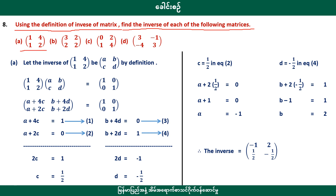We are finding the inverse of a matrix using the definition. In the inside of the region, we have a matrix of 1, 4, 1, 2. Let the inverse of this matrix be A, B, C, D. By definition, the product of the matrix and its inverse equals the identity matrix 1, 0, 0, 1. This gives us: A plus 4C, B plus 4D, A plus 2C, B plus 2D equal to 1, 0, 0, 1.